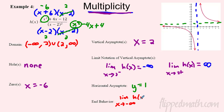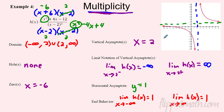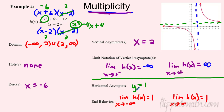For end behavior, we use limit notation: the limit of h(x) as x approaches negative infinity equals 1, and the limit of h(x) as x approaches positive infinity equals 1. This is the formal definition of a horizontal asymptote — you look left and right and see what value the function approaches. So the vertical asymptote at x = 2 and the horizontal asymptote at y = 1 together describe the full behavior of this rational function. Go ahead and practice — good luck on the mastery check!